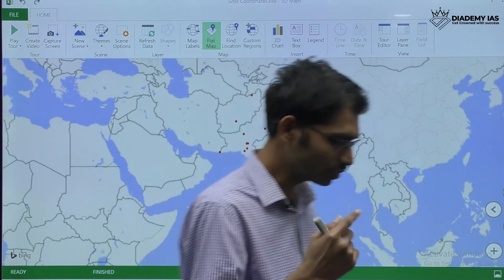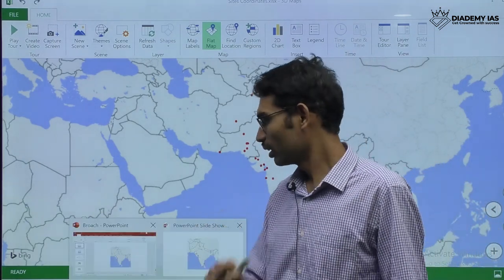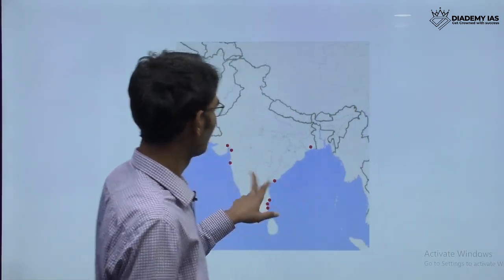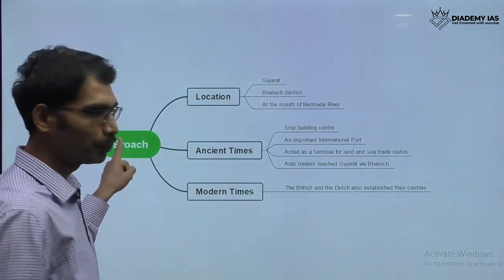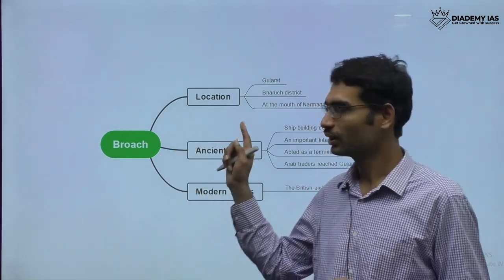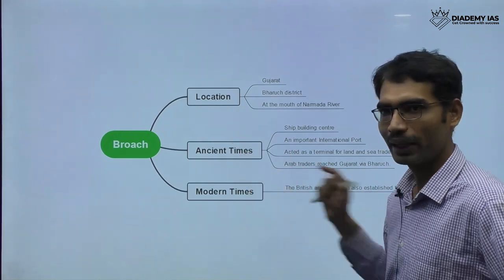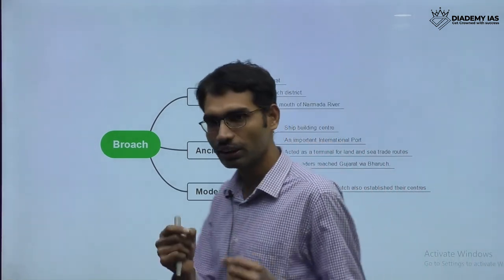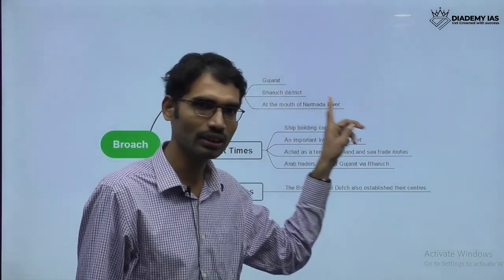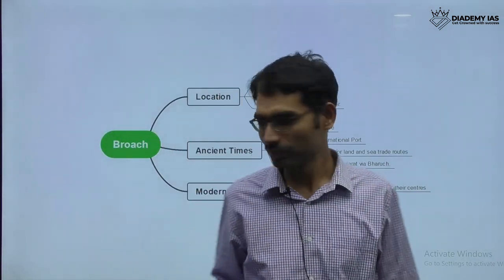Today let us see how to utilize this technological tool to simplify this problem. I have given different sites and will also give descriptions. For example, if you take Brooch — Brooch is an example of a site from ancient times. It is a very important site in the Gujarat region. When you join the class, I will give you a mind map with different sub-points for every site. The first important aspect is identifying exactly which location the map site is in.